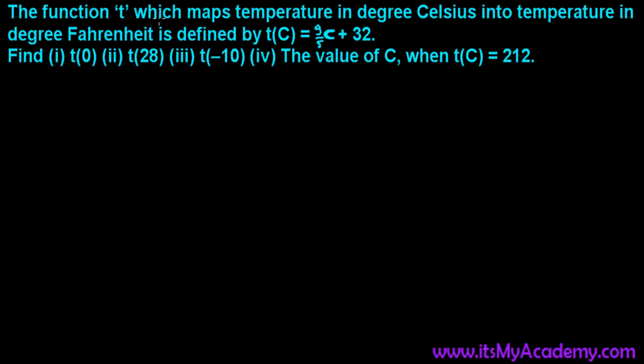Let me read the question. The function t which maps the temperature in degree Celsius into the temperature in degree Fahrenheit is defined by t(C) equals 9/5C plus 32. Find t(0), t(28), t(-10), and the value of C when t(C) equals 212.